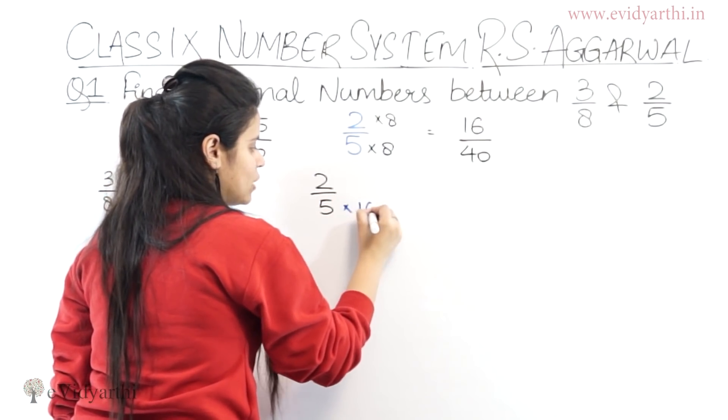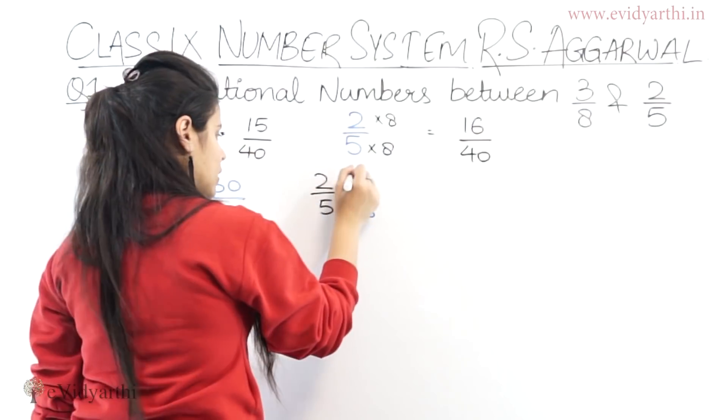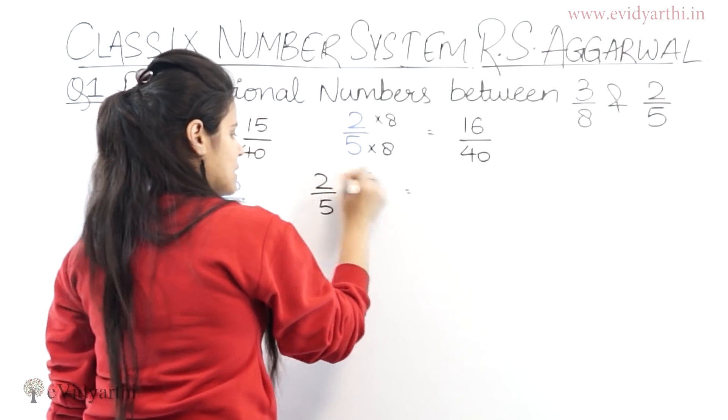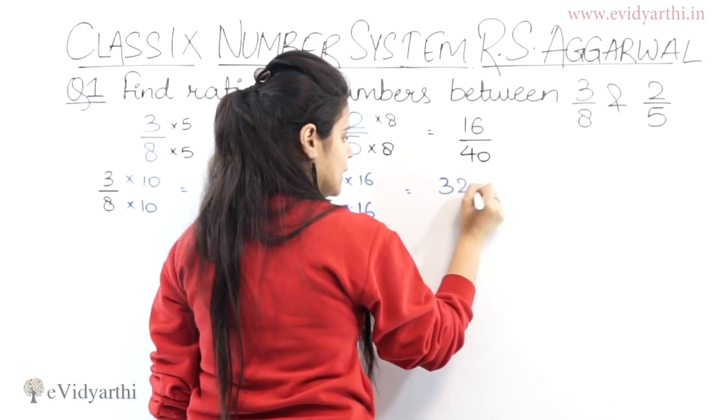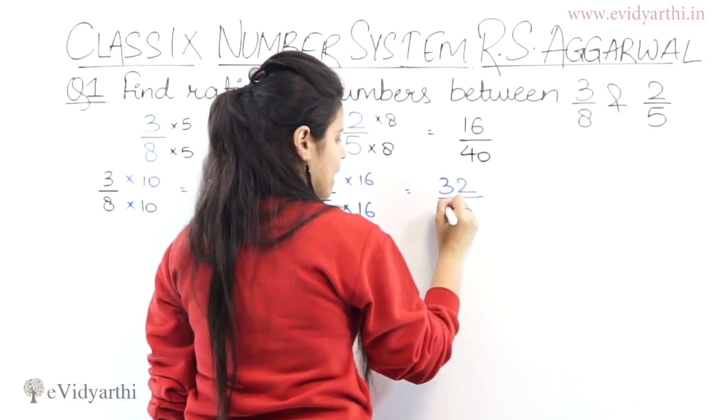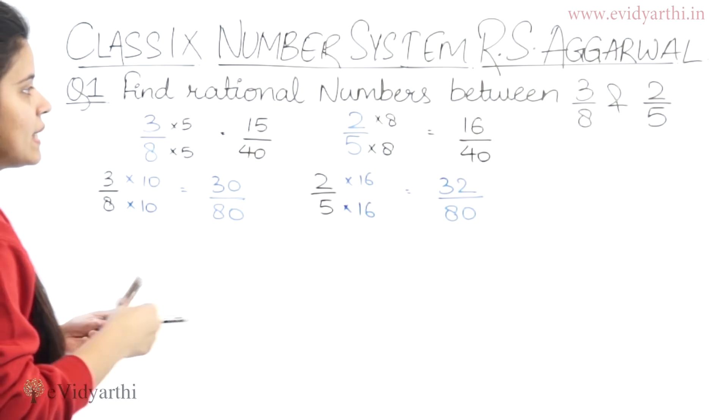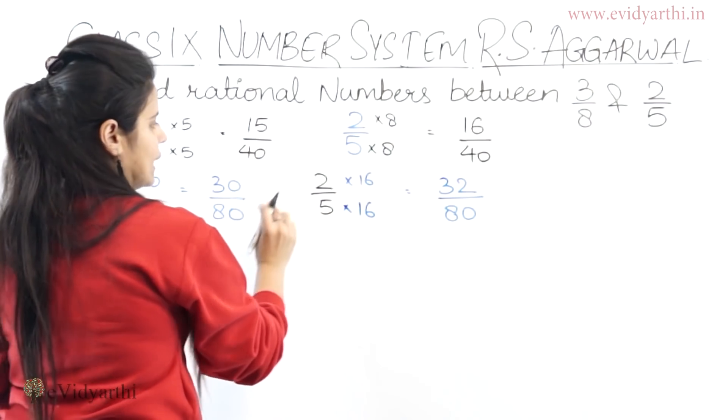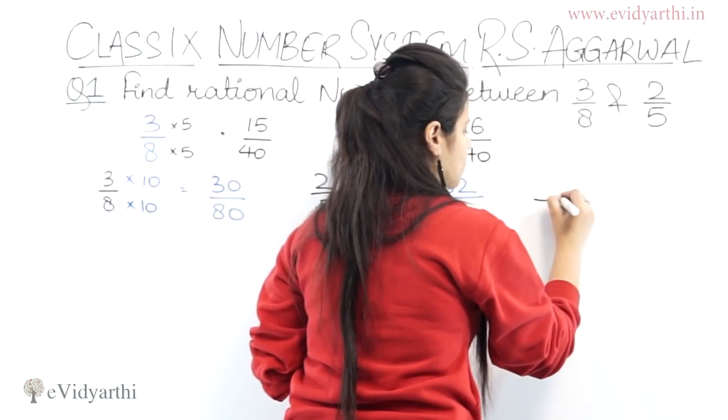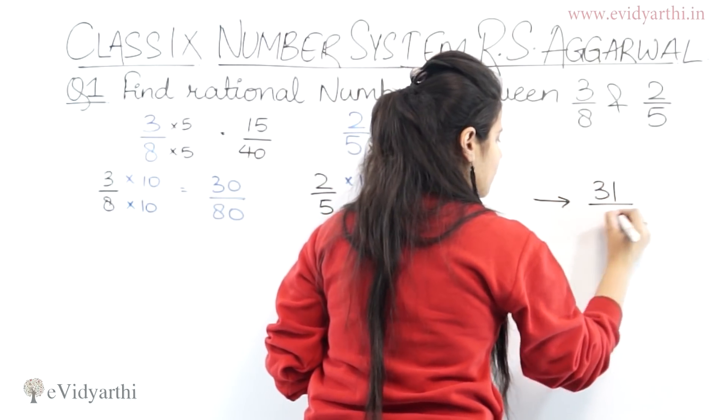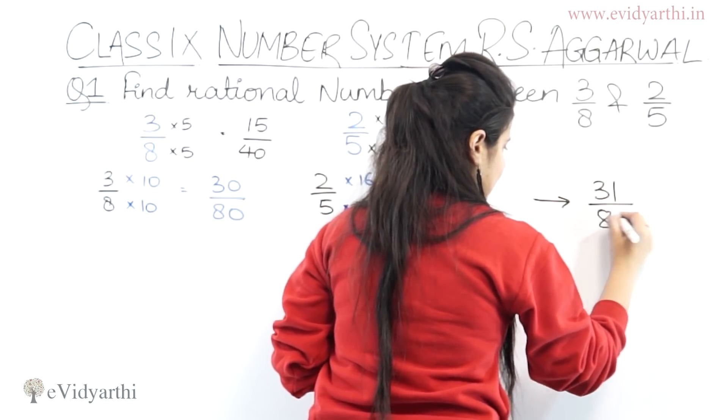So, we will have 16 by 16. 16 into 5 is 80. So, 16 into 2 is 32. Upon 16 into 5 is 80. So, now, how many rational numbers will be? 30 upon 80, 32 upon 80. Only one rational number will be, which is 31 upon 80.